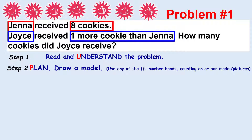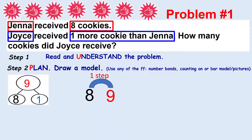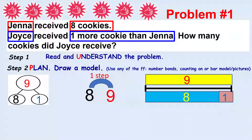Step two is Plan — draw a model. You can use number bonds, counting on, or bar models. We count on starting from eight, one step, so it's nine. With a bar model, the number on top is the greater number — the total of the two parts below. One part is one, one part is eight. The greater number has the greater size, and the smaller number has the smaller size.